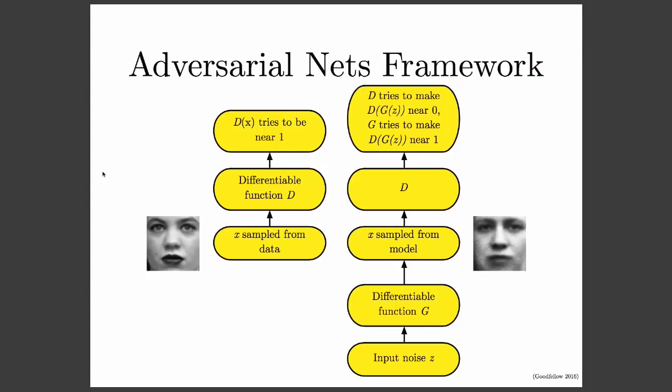The particular approach that generative adversarial networks take is to have two different agents play a game against each other. One of these agents is a generator network, which tries to generate data, and the other is a discriminator network that examines data and estimates whether it is real or fake. The goal of the generator is to fool the discriminator, and as both players get better and better at their job over time, eventually the generator is forced to create data that is as realistic as possible — data that comes from the same distribution as the training data. The training process first samples some image X from the training dataset, then applies the discriminator network D to it.